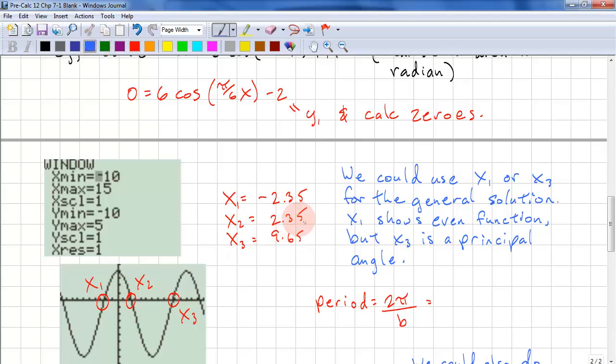We look for the differences again. This is 4.7 and this is 9.65, so we don't have an even spacing. As the note says here, we could use x1 or x3 for the general solution because we see that it repeats here and here. But in this case, it's better to use x1 and x2 for your solutions, even though x1 is not a principal angle, because it shows symmetry. This is an even function, it's reflected on the y-axis.